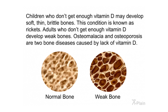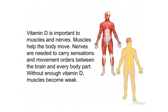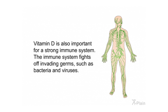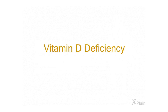Adults who don't get enough vitamin D develop weak bones. Osteomalacia and osteoporosis are two bone diseases caused by lack of vitamin D. Vitamin D is also important to muscles and nerves — muscles help the body move, and nerves carry sensations and movement orders between the brain and every body part. Without enough vitamin D, muscles become weak. Vitamin D is also important for a strong immune system, which fights off invading germs such as bacteria and viruses.